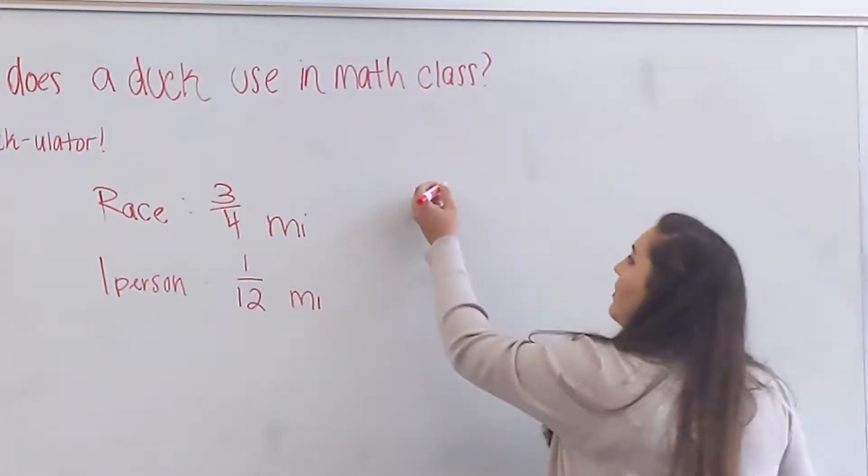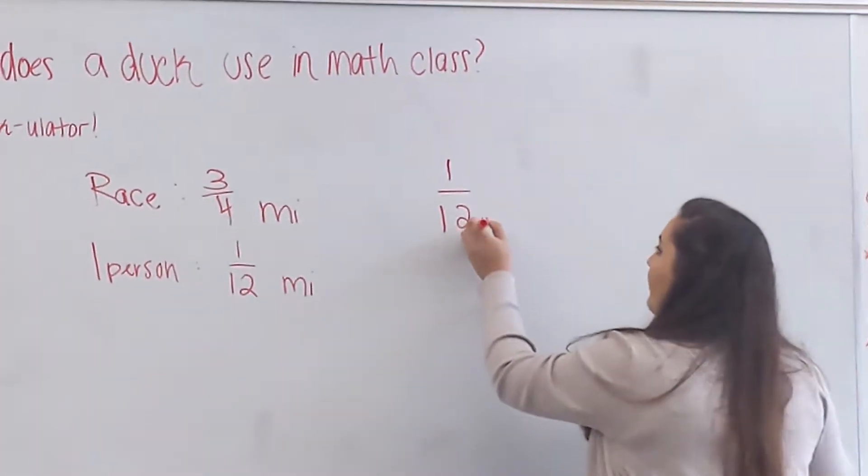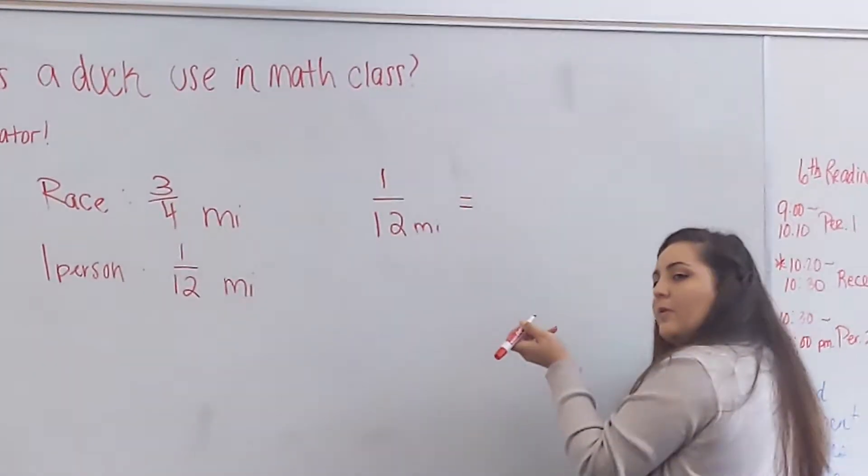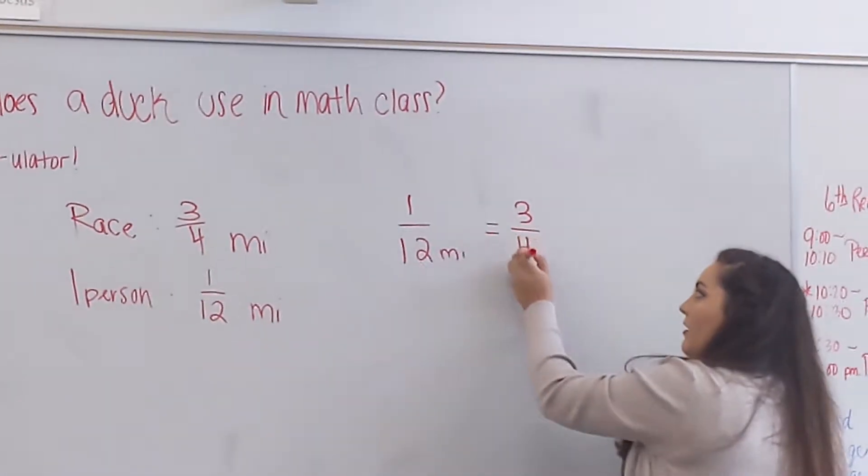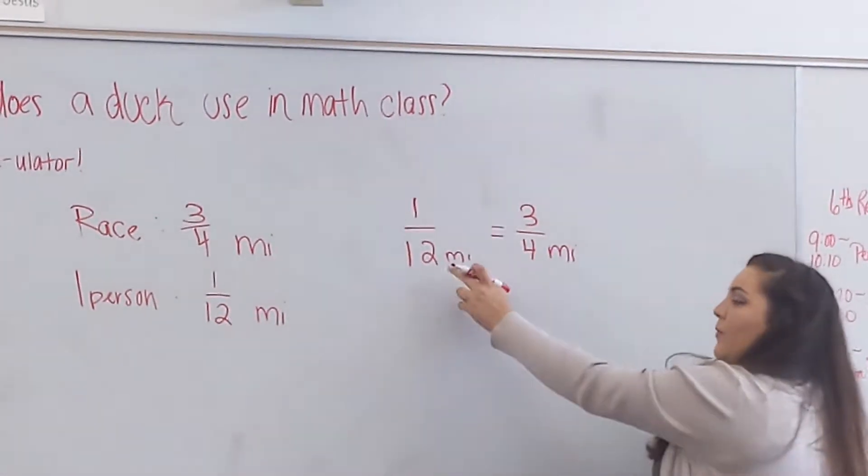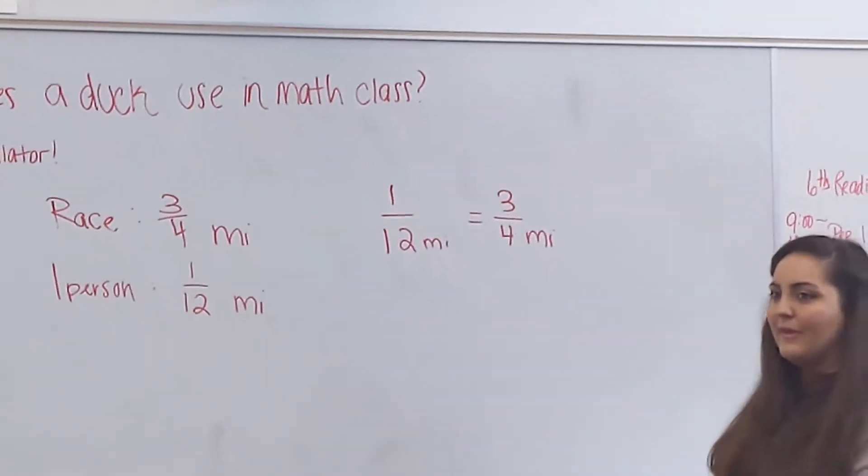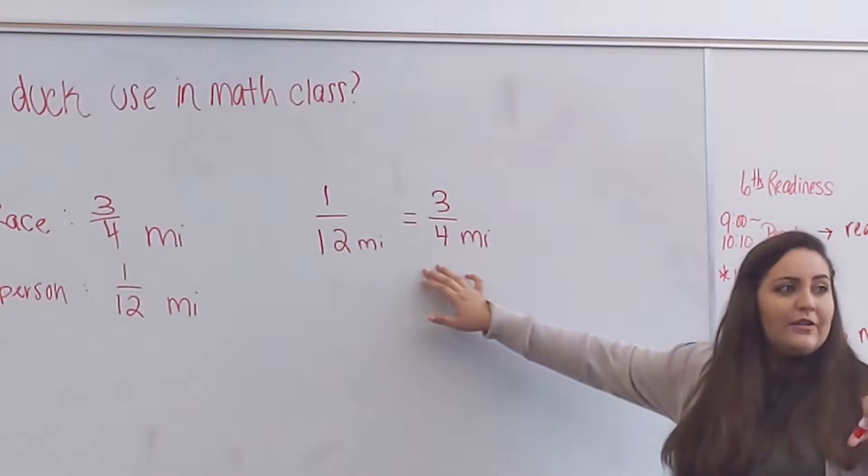JP, do you have to see how many of the one person could fit into the three quarters of a mile? You're right. So we have one twelfth of a mile. Would it be like equal to three quarters? Is that what you're trying to say? Trying to figure out how many one twelfths can fit into three quarters?